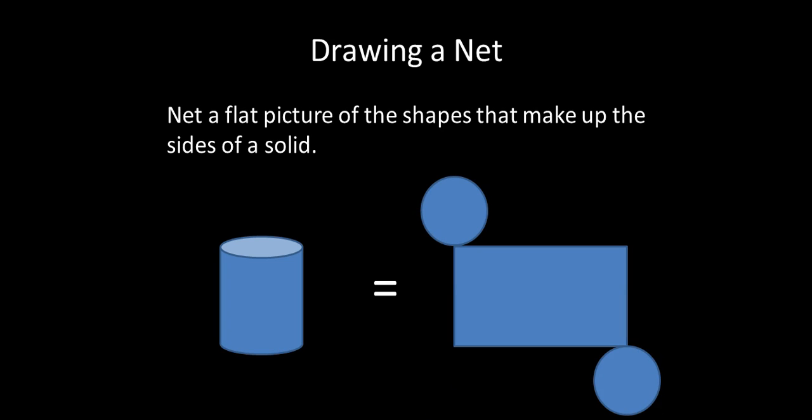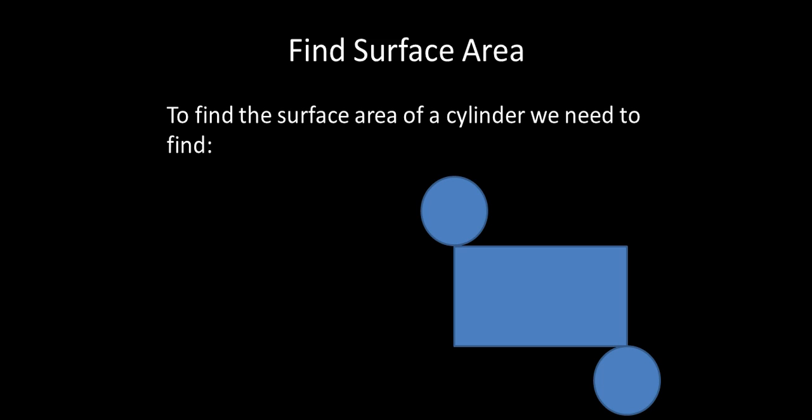So here's an example of a net of a cylinder. A cylinder has a circle on both sides, and then it has what we call the lateral surface area, or that rectangle that kind of wraps itself around the outside of those two figures. And that is the net of a cylinder.